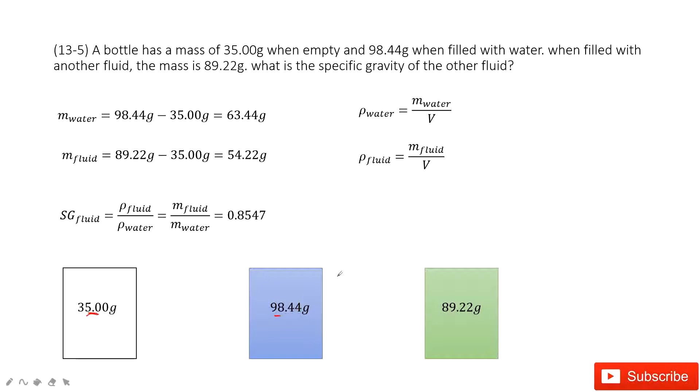And then if we put another liquid in this empty bottle, we can get the mass for the bottle plus this liquid is 89.22 grams. Now can you find the mass for this fluid? Yes. Using this mass minus this one, right? You get the mass for the fluid.